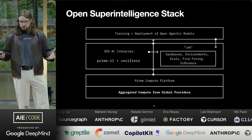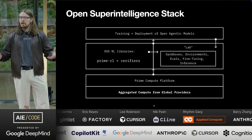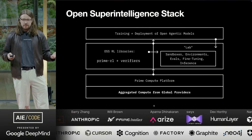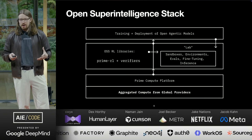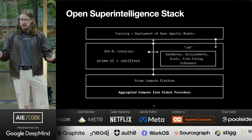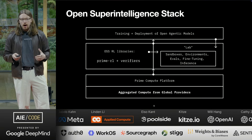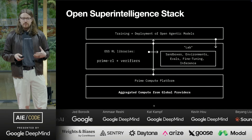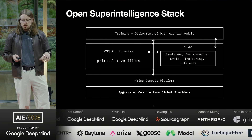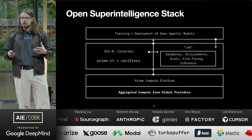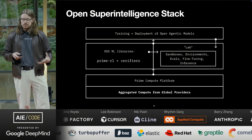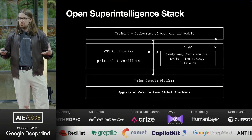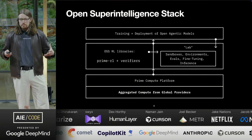A term we use to describe some of what we're building at Prime Intellect is the Open Superintelligence Stack — partly because it's a fun acronym, but also because the stack represents all the pieces of the puzzle to build the engine to go do research. There are a lot of layers: you need compute, you need orchestration, you need libraries for training and evaluation, and you need platforms to support code execution, evals, inference, and fine-tuning. We're doing all of these things.